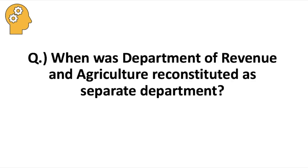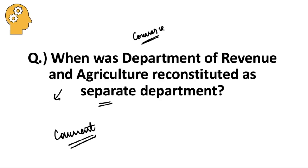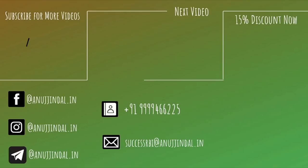A question for you: when was the Department of Revenue and Agriculture reconstituted as a separate department? Earlier, the Department of Revenue, Agriculture, and Commerce were one department. Later, the Commerce Department was separated, forming the Department of Commerce and the Department of Revenue and Agriculture. Mention the year in the comment section below. This is all for today's ARD question series. Don't forget to subscribe to our channel. Watch previous videos covering important ARD and ESI topics, such as the NITI Aayog report. You can also use the NABAT20 coupon code on NABARD courses — links are in the description. Thank you for watching.